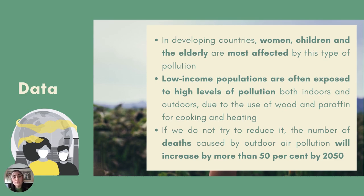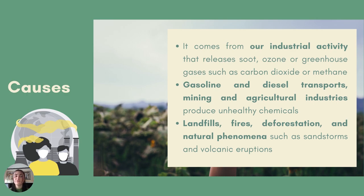Air pollution is clearly a global problem, and if we do not try to reduce it, the number of deaths caused by outdoor pollution will increase by more than 50% by 2050. This pollution comes from our industrial activity that emits substances into the atmosphere harmful to the planet, such as soot, ozone, or greenhouse gases. For example, petrol and diesel-powered transport and agricultural industry produce unhealthy chemicals. But also landfills, fires, deforestation, industrial infrastructure, and even natural phenomena such as sandstorms or volcanic eruptions can contribute to air pollution.